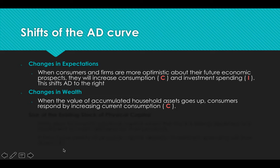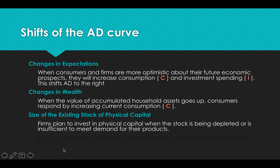Changes in wealth: as the value of your assets go up, consumers will spend more. Because if your house is worth a lot more, you feel good — one day you know you're going to sell your house for a lot of money, so you're willing to maybe forego some savings to spend money now. Firms will invest in physical capital either when machines are breaking down or demand is increasing. If I own a pizza place and I have customers waiting out the door, that's time for me to buy a new pizza oven to meet the demand of my customers.